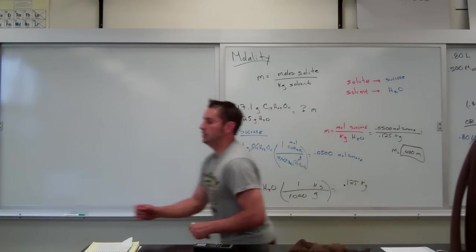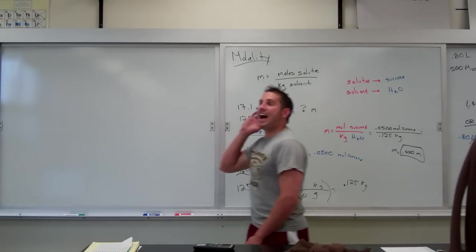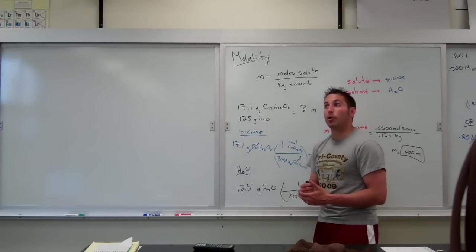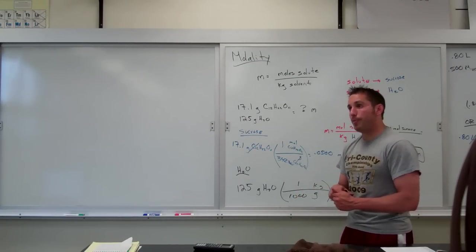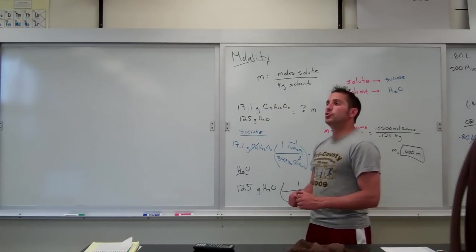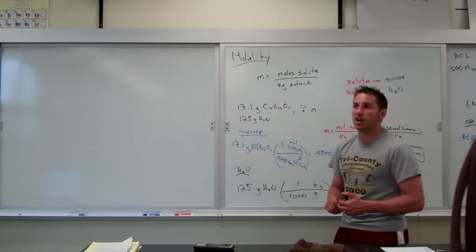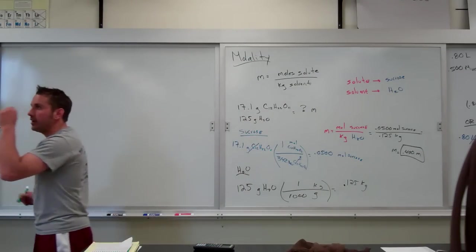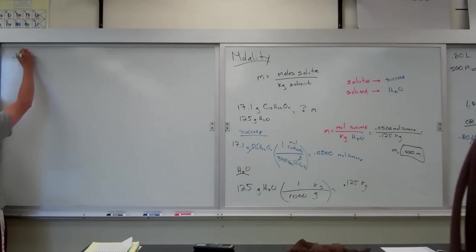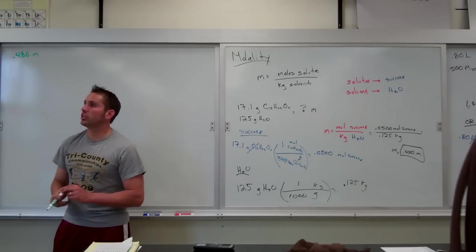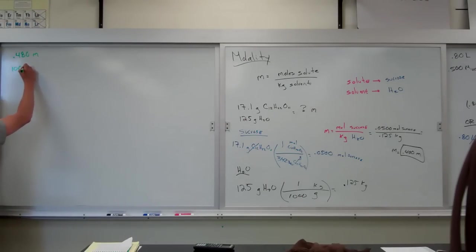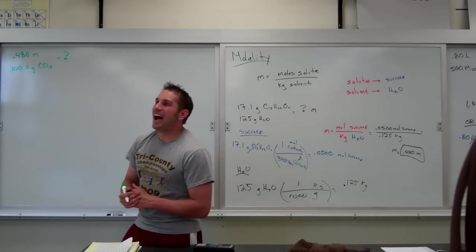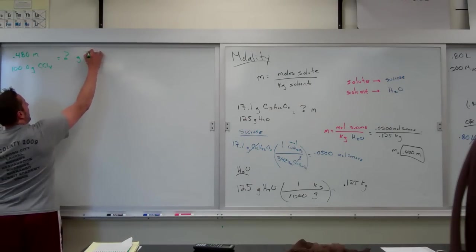Second question says, a solution of iodine, I2, in carbon tetrachloride, CCl4, is used when iodine is needed for certain chemical tests. How much iodine must be added to prepare a 0.480 lowercase m solution of iodine in CCl4 if 100.0 grams of CCl4 is used. Again, we'll list what we know, we list what we try to find. Up here, I see that we have a 0.480 lowercase m solution, and that we have 100.0 grams CCl4. The question says, how much iodine must be added, and how much means grams of I2.